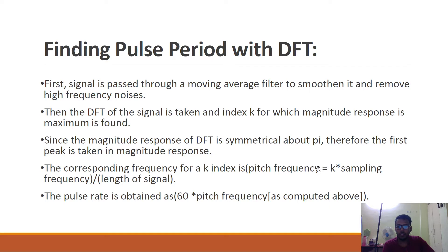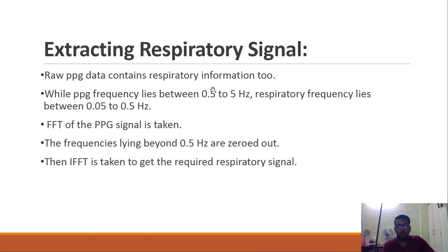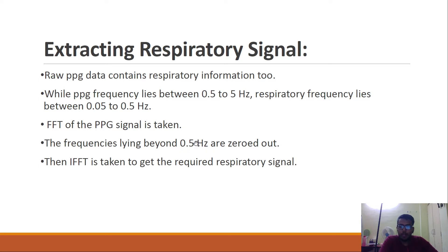Moving on to see how to extract the respiratory signal from the PPG signal. The raw PPG signal contains respiratory information. The PPG signal lies between 0.5 Hz to 5 Hz, and respiratory frequency lies between 0.05 to 0.5 Hz. We are going to take advantage of this separation. We will take the FFT of the PPG signal, then zero out the frequencies lying beyond 0.5 Hz so as to remove them. Then we take the IFFT to get the required respiratory signal.